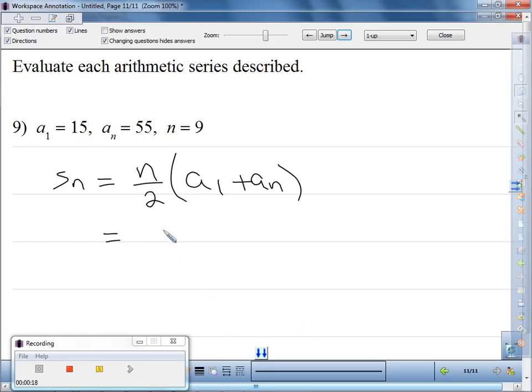So we're going to come up with, so it's going to be 9 over 2, which is not going to give us a whole number, but it's okay because we're going to multiply anyway. So we end up with 15 plus a sub n, which is 55.